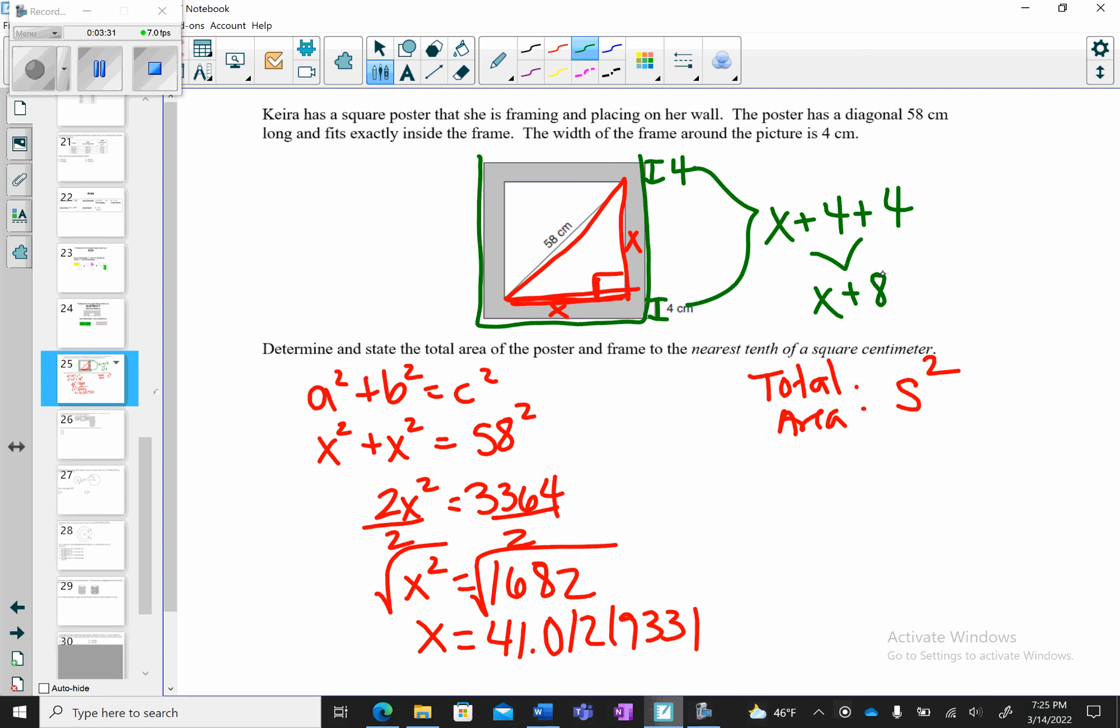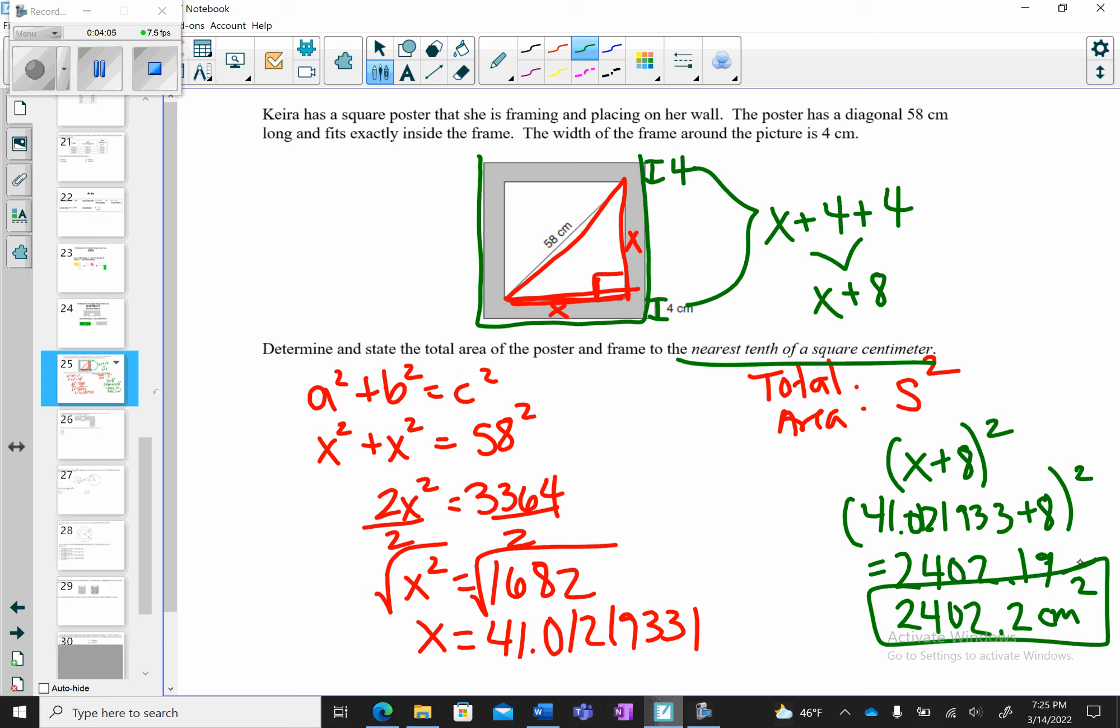So our area, we're going to take (x + 8)². Now, we already know what our x is. That's our 41.0121933 plus 8, and we're going to square it. And when we do that, we get 2,402.19. Because it wants us to round to the nearest tenth, we're going to do 2,402.2 centimeters squared. When you take area, it's squared.